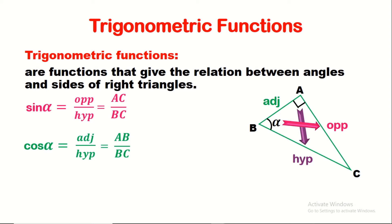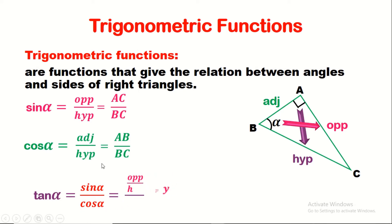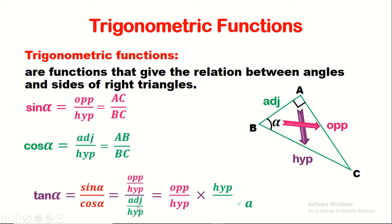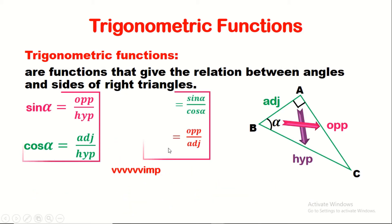The third trigonometric rule is tangent alpha. Tangent alpha is equal to sine alpha over cosine alpha. We can replace sine alpha by opposite over hypotenuse and cosine alpha by adjacent over hypotenuse. Since we are dividing fractions, we copy the first fraction, divide becomes times, and reverse the second fraction to hypotenuse over adjacent. We can simplify hypotenuse by hypotenuse, leaving opposite over adjacent, which is AC over AB. So tangent alpha equals sine alpha over cosine alpha, and also equals opposite over adjacent.